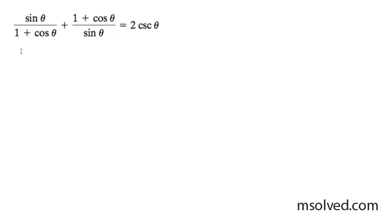Let's prove the following trig identity. We're going to start by getting common denominators, which leaves us with sin²θ + (1+cosθ)² all over sinθ(1+cosθ).